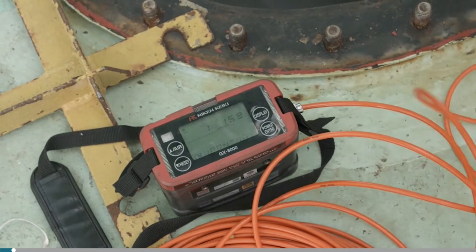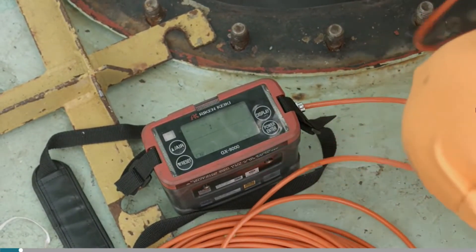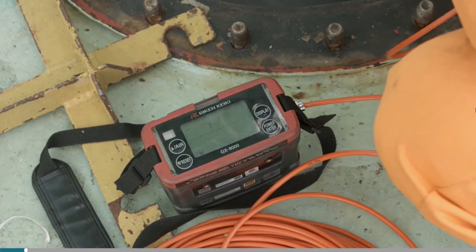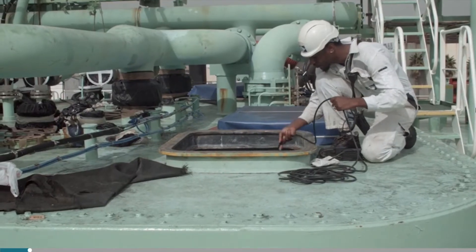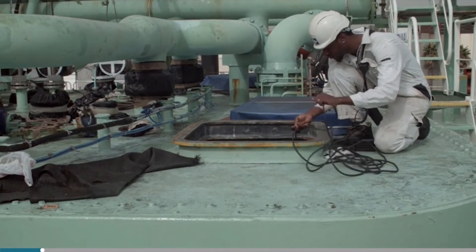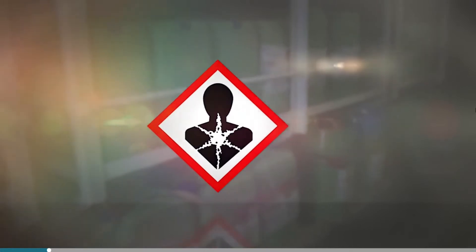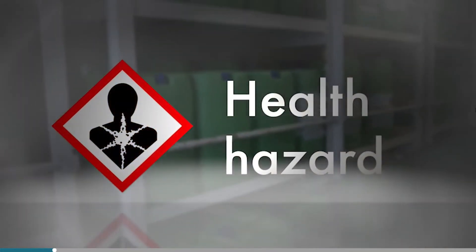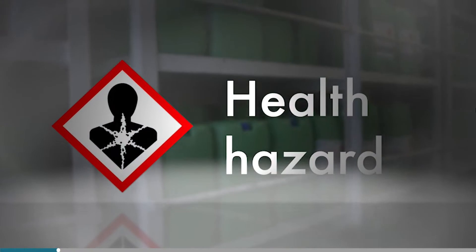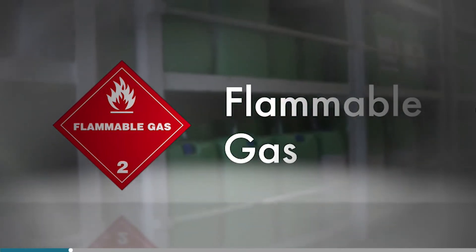One major hazard in an enclosed space is the atmosphere. The oxygen level might be below that required to support life. There may also be poisonous gas present such as hydrogen sulfide, nitrogen, and carbon monoxide, which can be fatal when breathed in. There may also be long-term health effects caused by the carcinogen benzene. There may also be flammable hydrocarbon gas present, and hydrogen sulfide, which are both flammable and toxic.